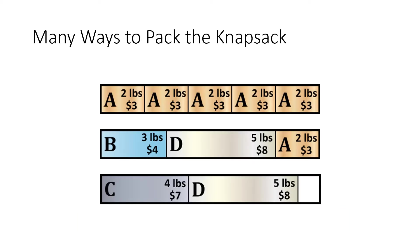There are a lot of ways we could pack this knapsack — it holds 10 pounds total. That could be five A's (10 total pounds), or a B, a D, and an A, or a C and a D leaving one pound left over. It's okay to have empty leftover space — maybe that ends up being the most efficient way. Adding up the values, all three of these packing options are worth fifteen dollars.